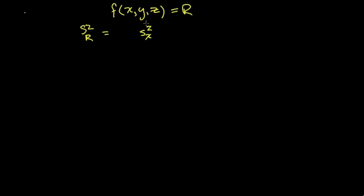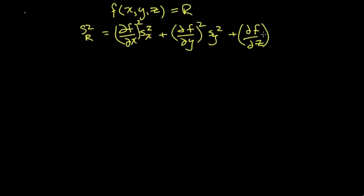So we take the standard deviation in x and square it to give the variance, and we multiply it by a weighting factor. The weighting factor is the partial derivative of that function with respect to the variable squared. So we have a similar term for all the other measured variables: the partial derivative with respect to y times the variance in y, plus the partial derivative with respect to z squared times the variance in z, and so on for all of the measured quantities.